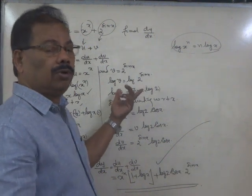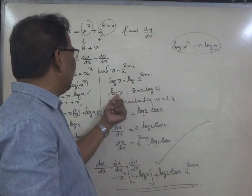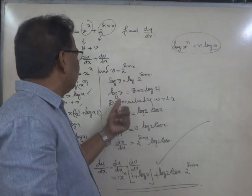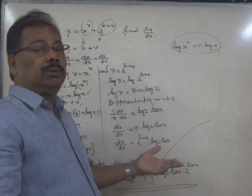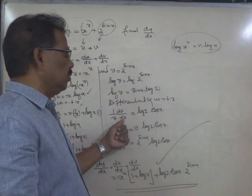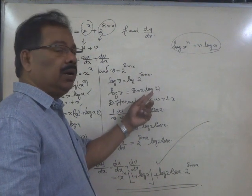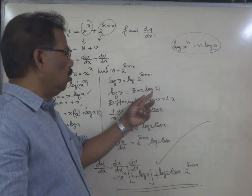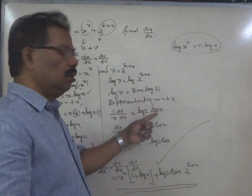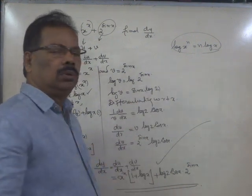Now we can differentiate on both sides. If you differentiate log v with respect to v, the answer will be 1 by v. We want the differentiated result with respect to x, so 1 by v multiplied by dv by dx is equal to log 2 — which is a constant — into the derivative of sin x with respect to x, which is cos x. So we get log 2 into cos x.